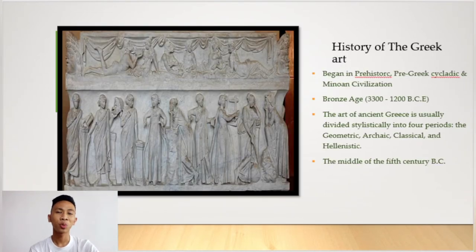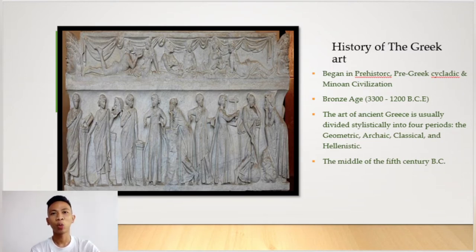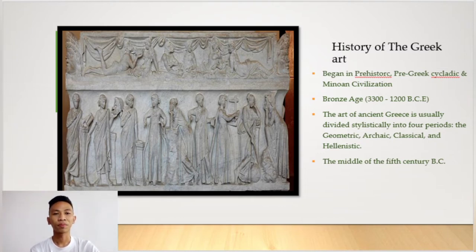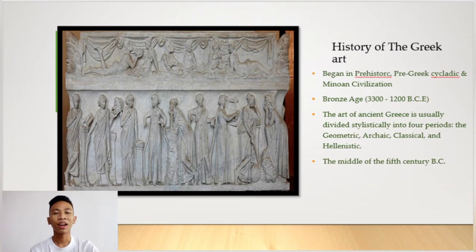Let's start first with the history of Greek art. Where did Greek art start? It is said to have originated in the prehistoric, pre-Greek, Cycladic, and Minoan civilizations. Basically, it occurred during the Bronze Age, which is dated way back to 3300 to 1200 BCE.